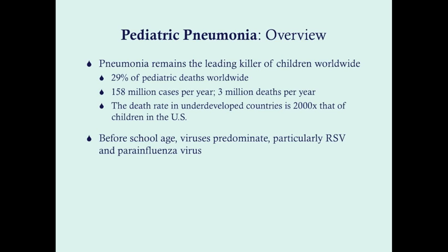There are 158 million cases per year, and pneumonia causes 3 million deaths per year — and I think that's for everybody, not just children. The death rate in underdeveloped countries is 2,000 times higher than that of children in the U.S. for pneumonia. So if you are a child in an underdeveloped country, you are 2,000 times more likely to die from pneumonia than a child in the U.S. That's pretty staggering.